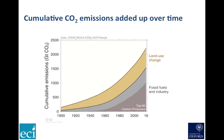So if we add up emissions over time — which is what the climate system does — we can see that fossil fuels only accounted for about half of cumulative emissions until around the 1970s, but their share has since grown rapidly as land use emissions have declined.